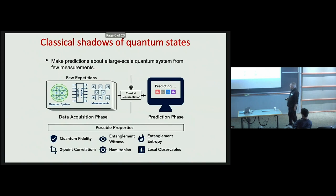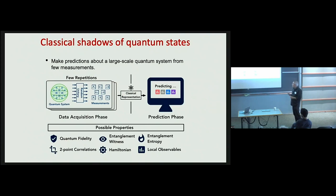Specific examples of properties that we can predict more efficiently using the classical shadow method compared to previous protocols include: fidelity with target states, entanglement measures, entropic quantities, few-point correlation functions, expectation values of local observables and local Hamiltonians, and many others.